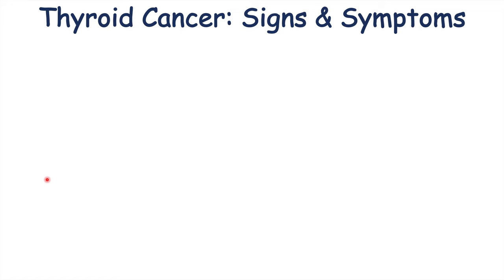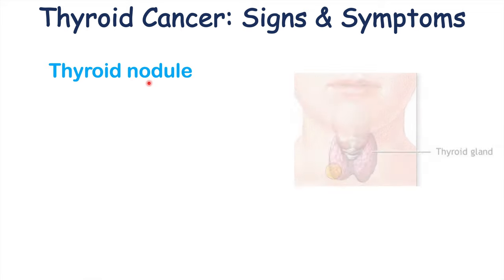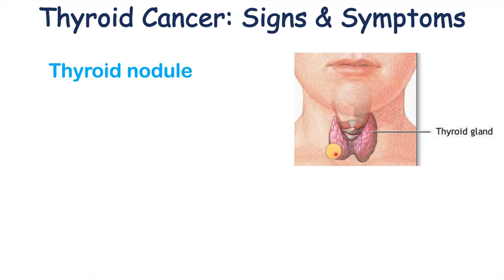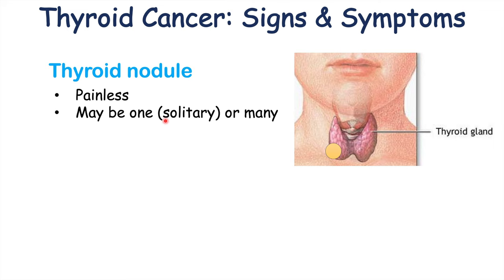One of the most important signs of thyroid cancer is a thyroid nodule. A thyroid nodule is a growth from the thyroid gland — a little lump or mass that protrudes from it. It can be felt or visible by the patient and is a painless mass, so if a patient touches that lump on their throat, it will be painless. A patient may have only one, a solitary nodule, or they can have many.